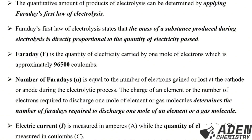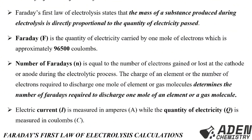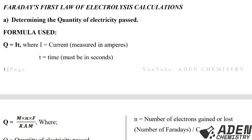Faraday (F, capital letter) is the quantity of electricity carried by one mole of electrons, approximately 96,500 Coulombs. The number of Faradays (n, small letter) equals the number of electrons gained or lost at the cathode or anode. The charge of an element — the number of electrons required to discharge one mole of it — determines the number of Faradays required. Electric current is measured in amperes (A) while quantity of electricity (Q) is measured in Coulombs (C).